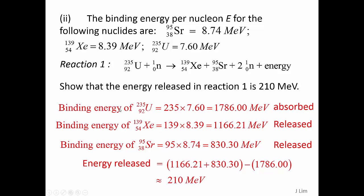So the binding energy of uranium-235 is 1786 MeV. That means this amount of energy is released when uranium-235 is separated into 92 protons and 143 neutrons.